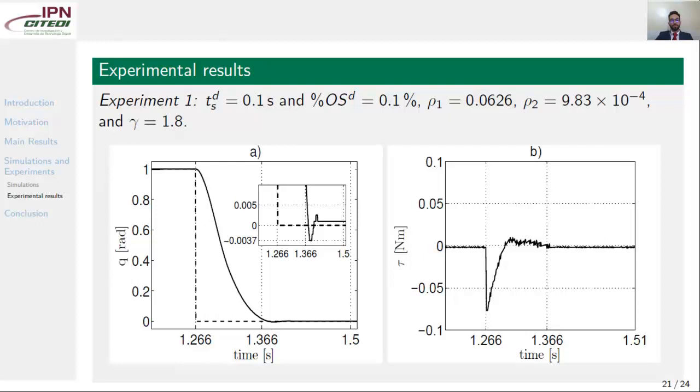In the first experiment, we tried to reproduce the same results of the first simulation. We also want a settling time of 0.1 second and percent overshoot of 0.1. Applying the methodology, we get rho1, rho2, and gamma. And in figure A, we showed the step time response. Notice that the settling time was 0.1 second and the percent overshoot was near to 0.1 percent. In figure B, we showed the control input in this case.